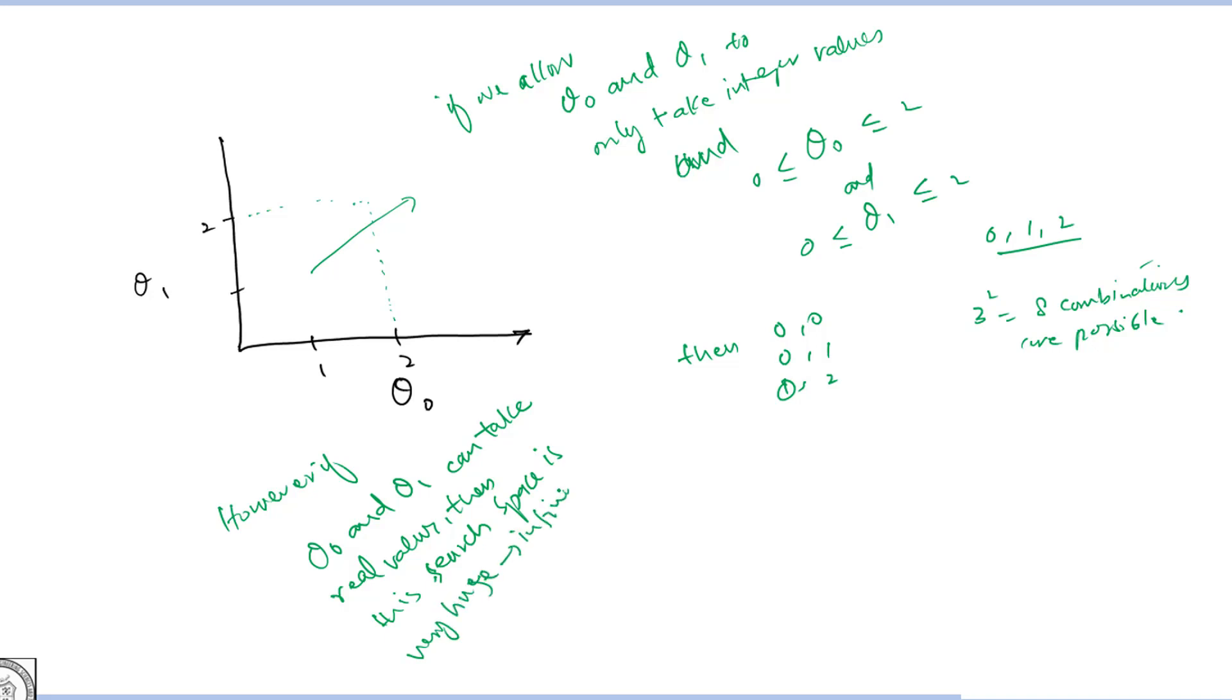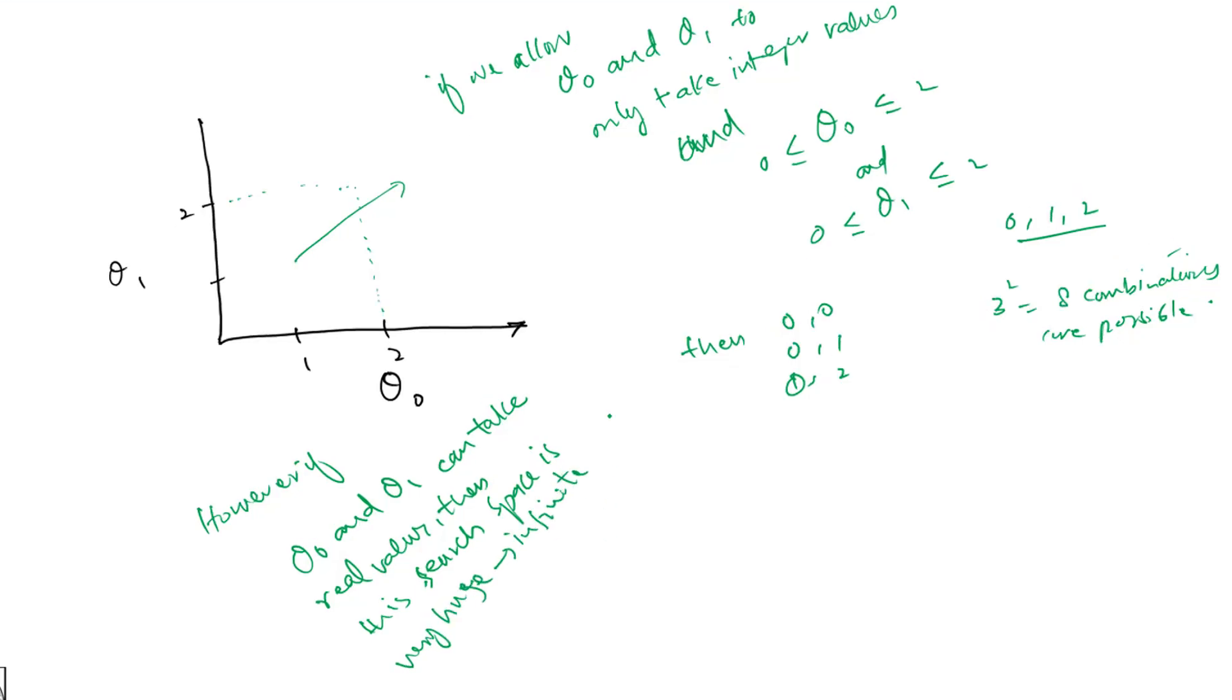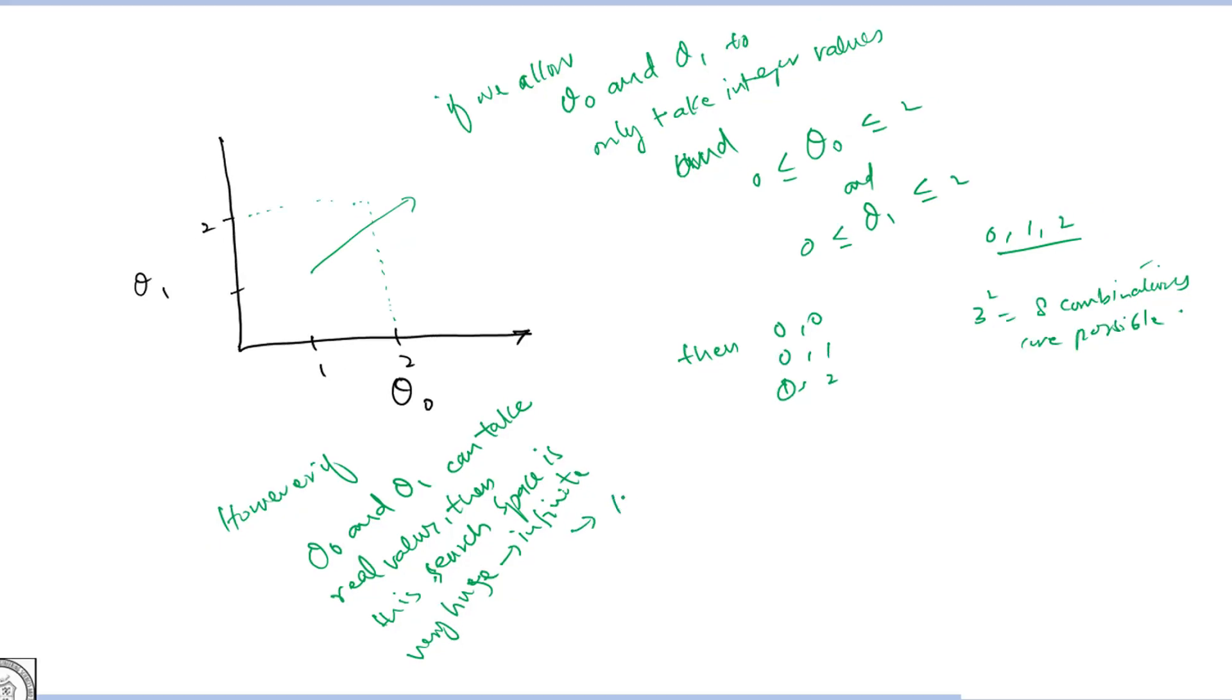The search space is infinite and somewhere the optimum theta 0 and theta 1 lies in this space. We can see that it is like searching a needle in the sea. It is therefore very important to convince yourself that solving optimization problems, even simple optimization problems based on random guesses, is not a feasible approach.